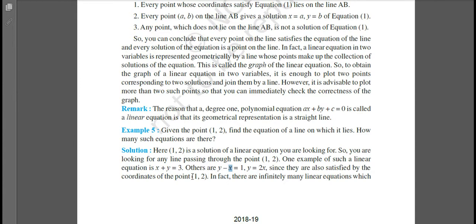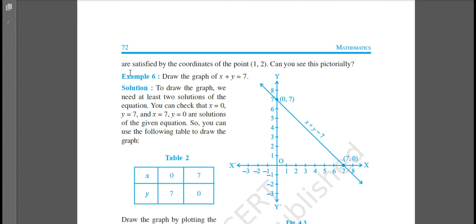So you are right, these are the solutions. But in fact there are infinitely many linear equations which are satisfied by the coordinates of the point (1, 2). So there are infinite many solutions. Through this one point (1, 2), we can pass infinitely many number of lines. We can pass infinite number of lines through a single point.